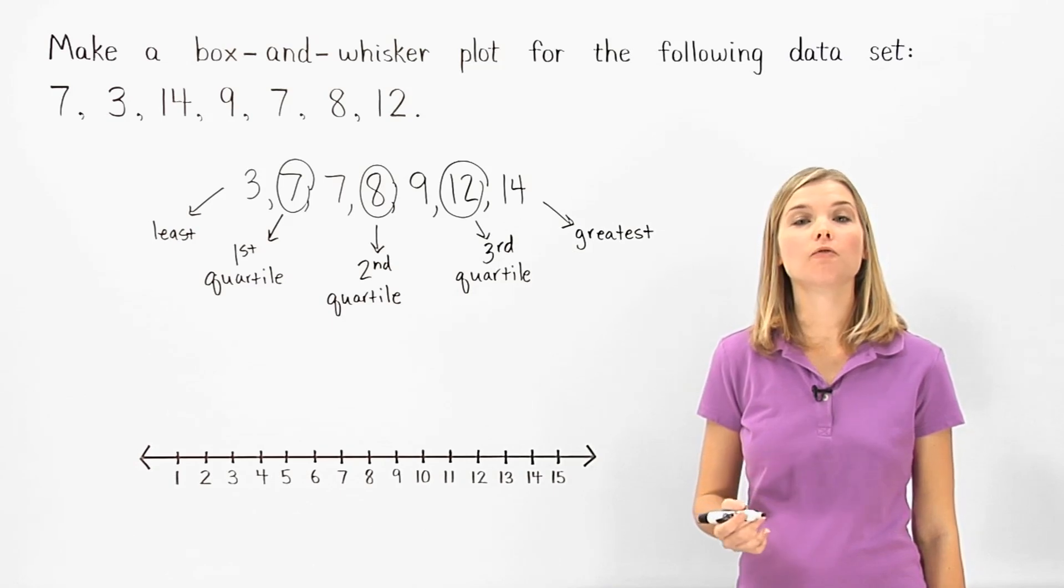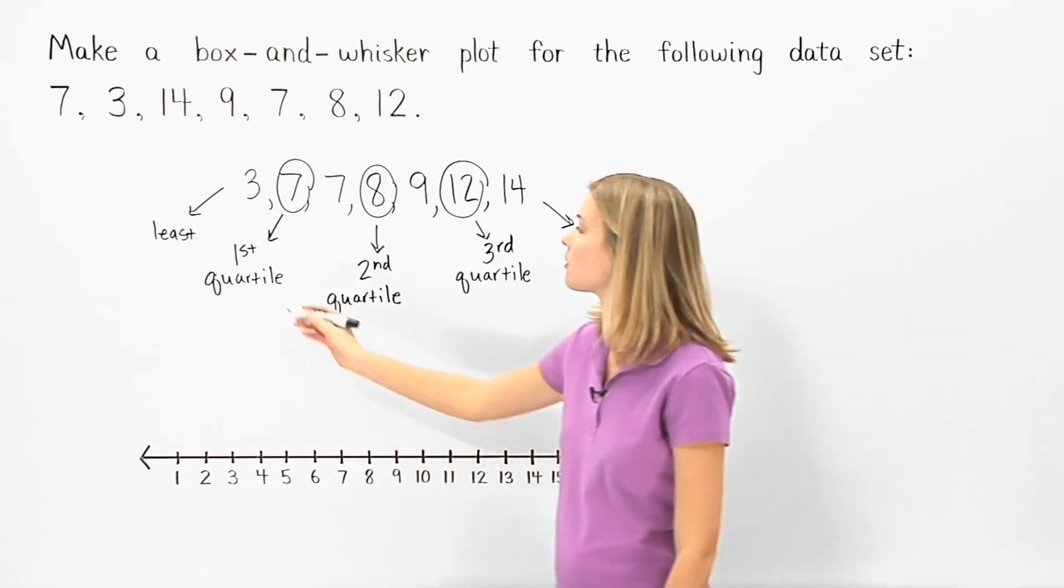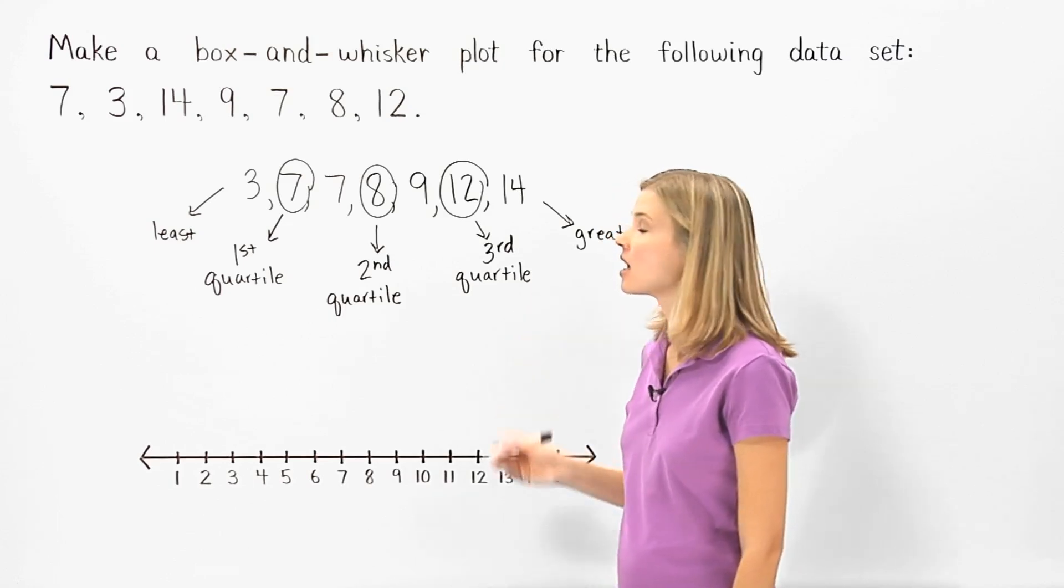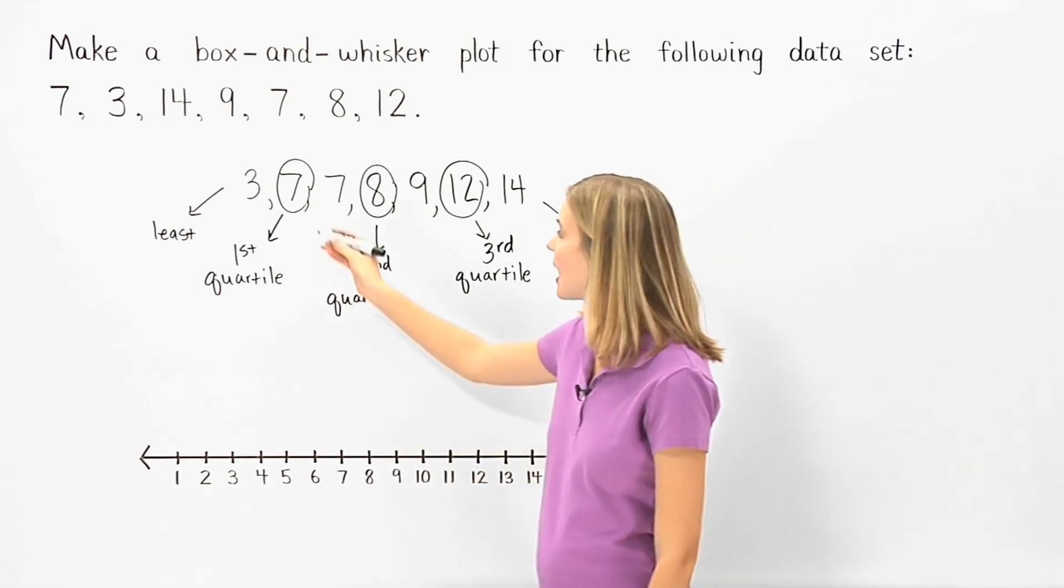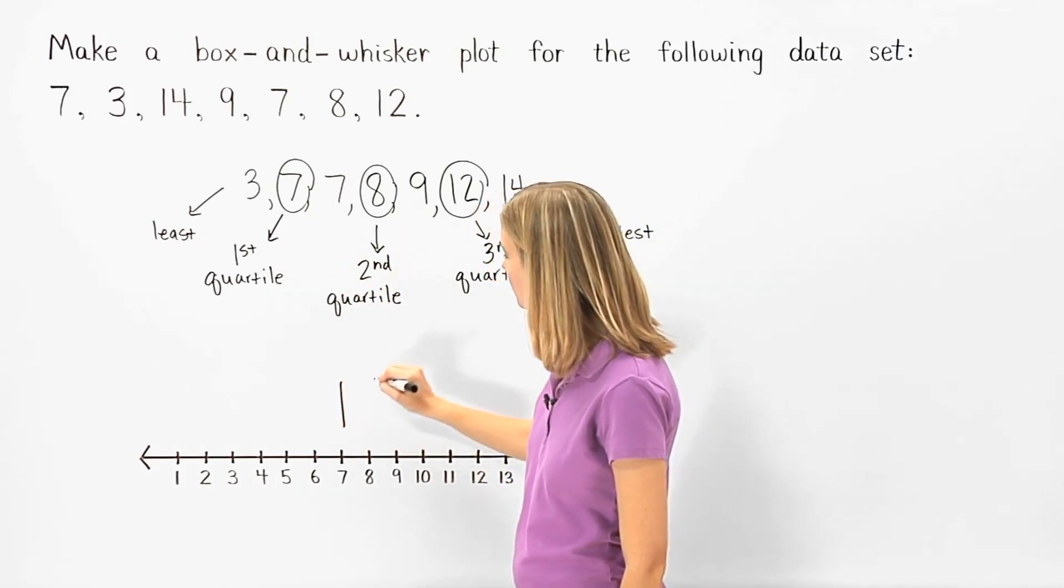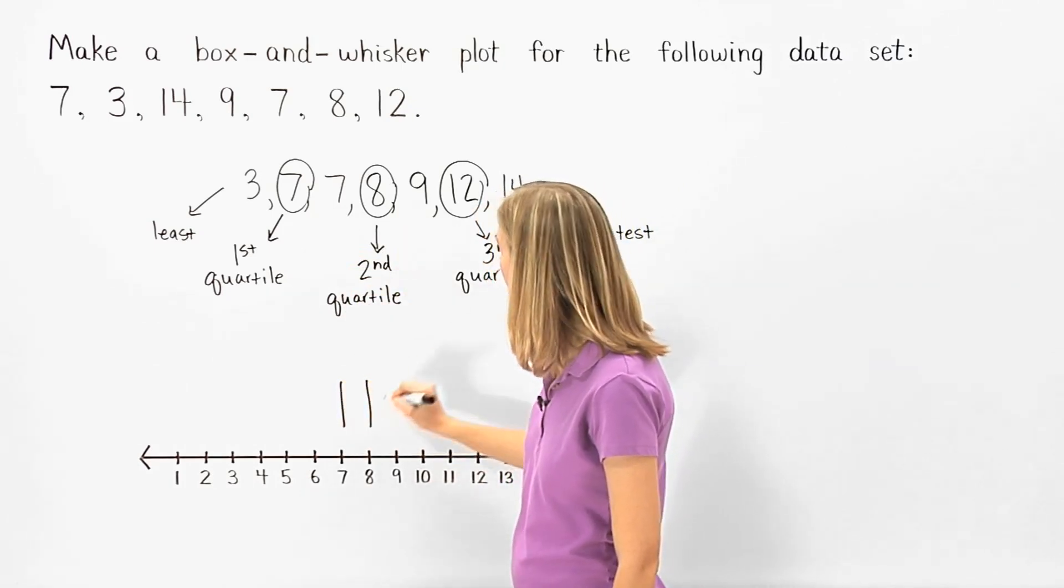Next, we draw vertical line segments at the first, second, and third quartiles. So we draw vertical line segments at 7, 8, and 12.